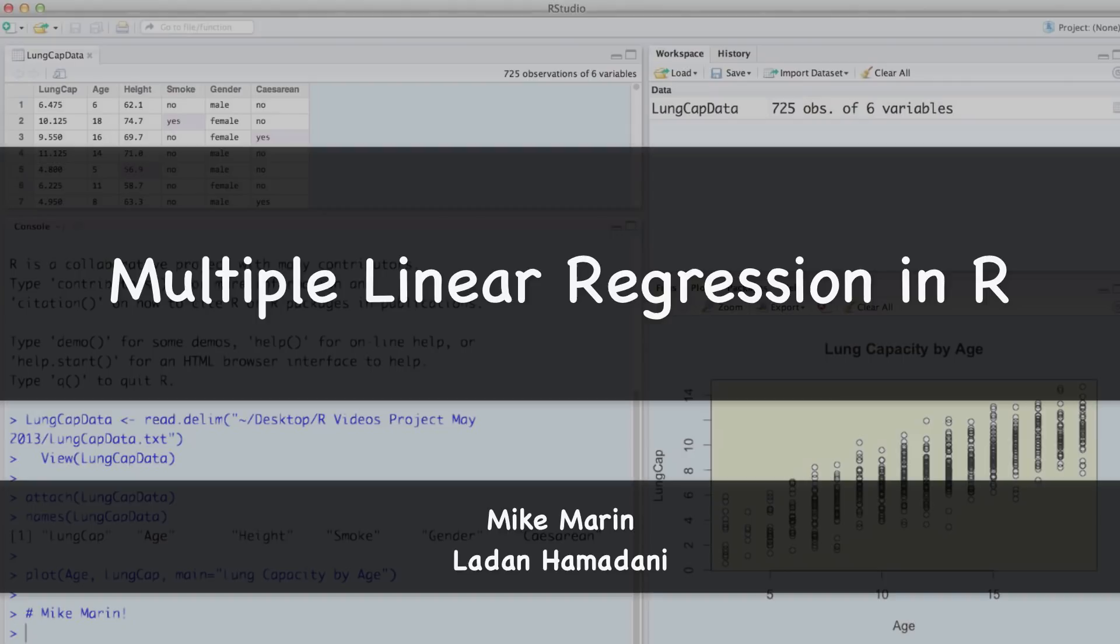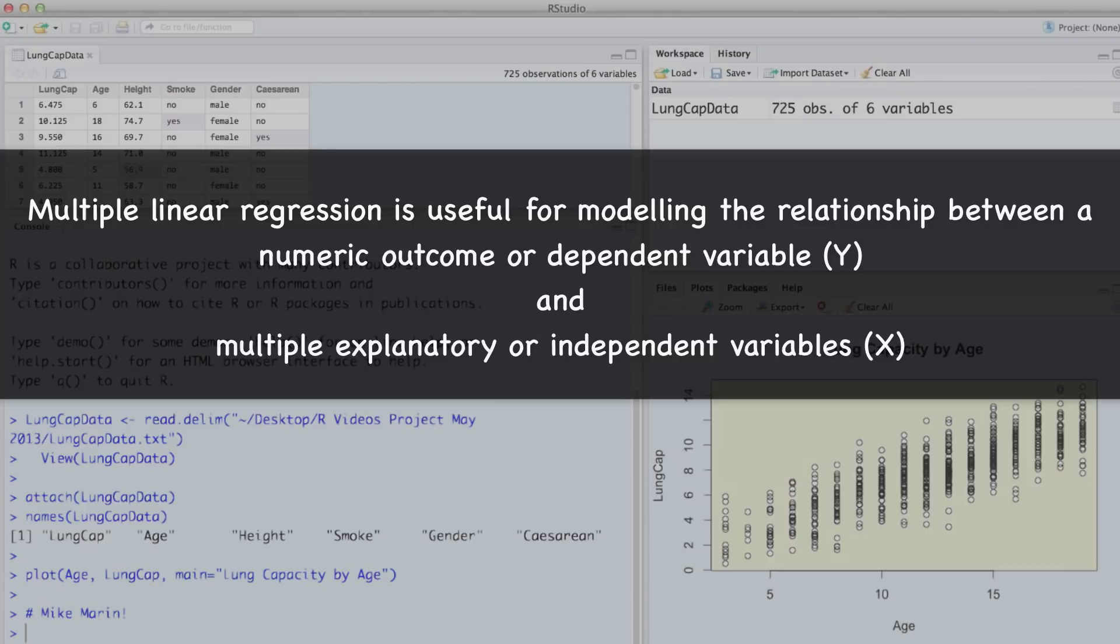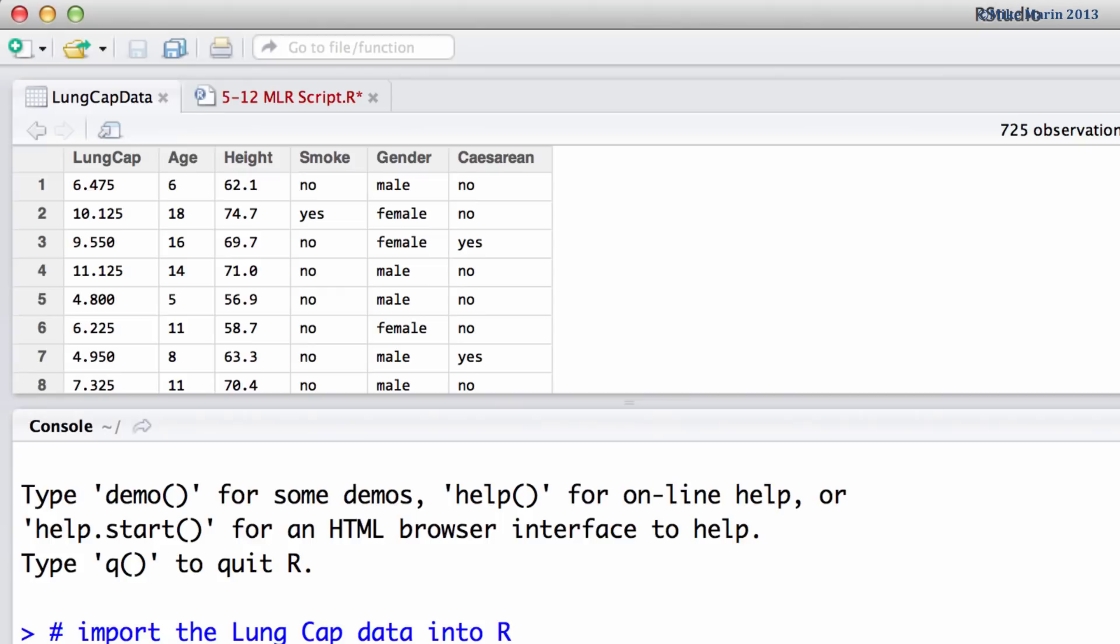Hi, I'm Mike Marin and in this video we'll introduce multiple linear regression. Multiple linear regression is useful for modeling the relationship between a numeric outcome dependent or y variable and multiple explanatory independent or x variables.